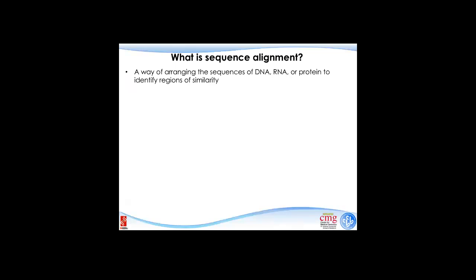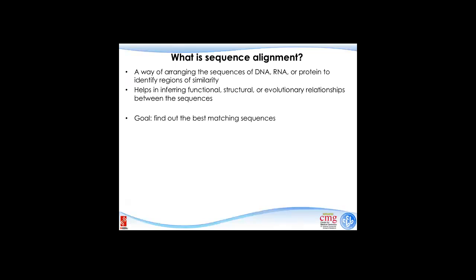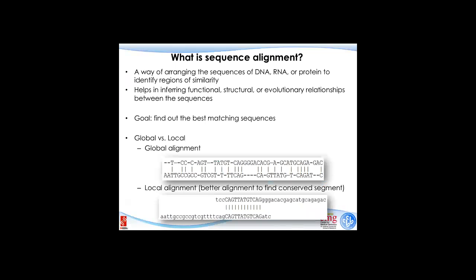What is sequence alignment? It's a way to arrange sequences of DNA, RNA, or even proteins to identify regions of similarity, infer functions, structures, and evolutionary relations between sequences. But translated into plain English, we're just trying to find the best matching — we got two strings and we're seeing how they align with each other. Before we get into that, there are two different concepts: global alignment and local alignment.